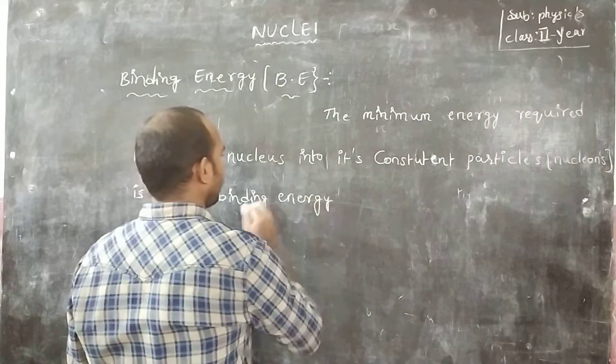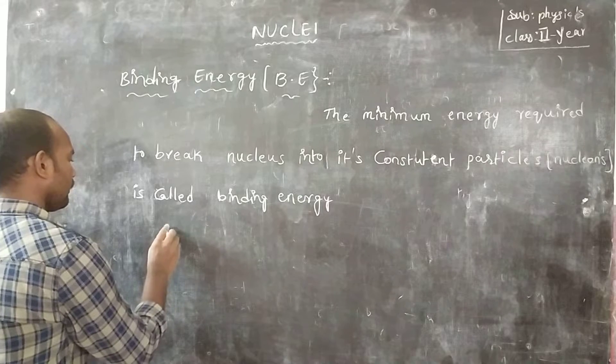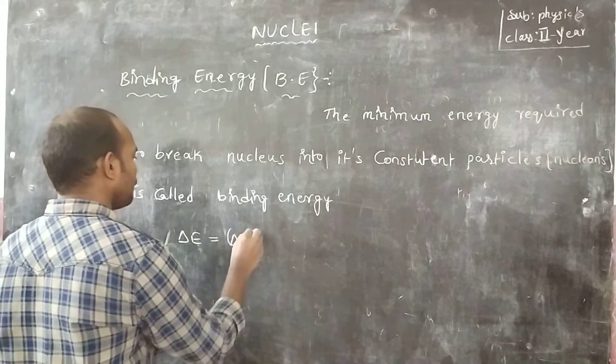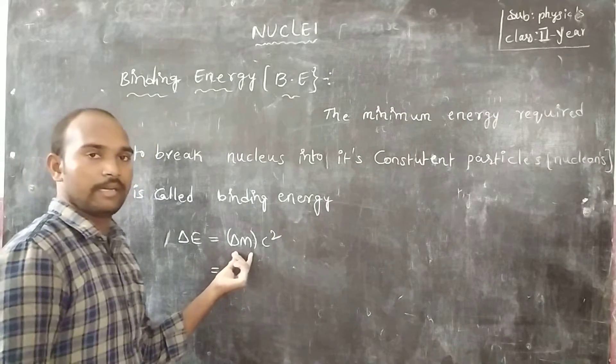Binding energy formula: Delta E is equal to Delta m C square. If you want to convert into atomic mass unit, then just you know the formula.